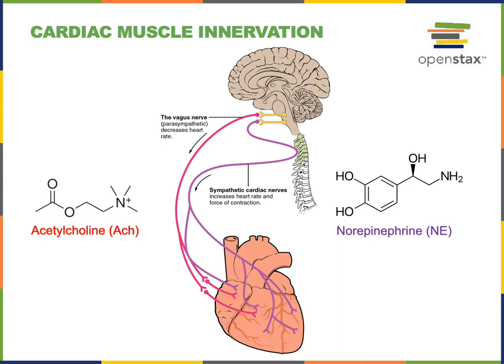Cardiac muscle can be regulated by the autonomic nervous system where the parasympathetic division will lead to a decrease in heart rate, while the sympathetic division will stimulate an increase in heart rate and an increase in the force of contraction.